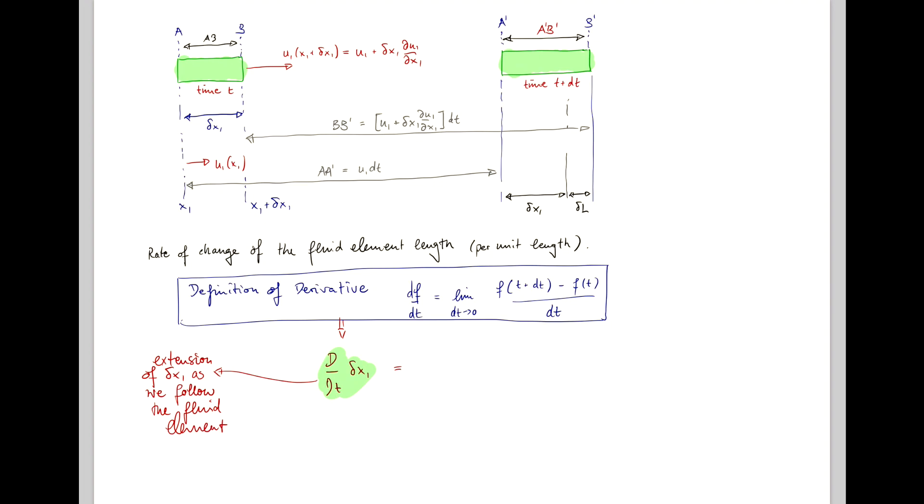And in this case, here, we can write this as the limit where dt goes to 0. And now our delta x1 at time t plus dt is just a dash b dash minus f at time t, which is ab